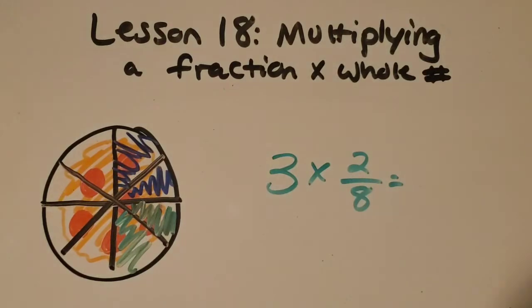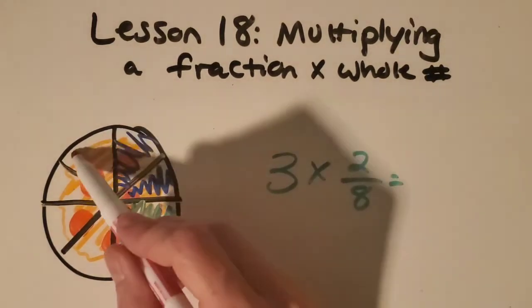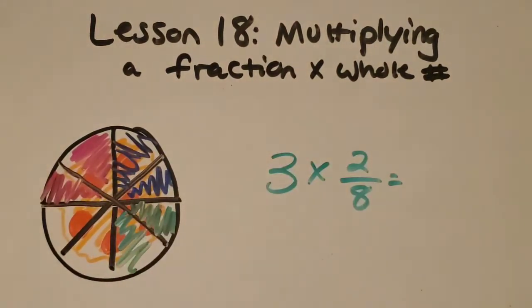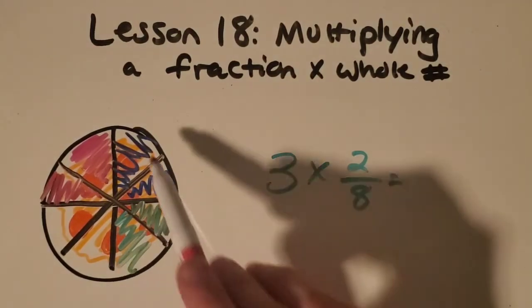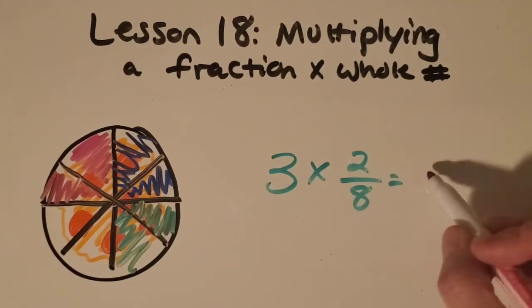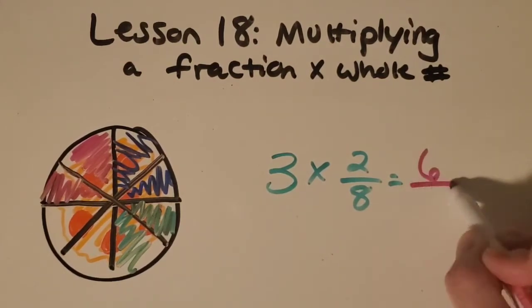Okay, so there's the second person. And then the third person had two-eighths as well. So we'll shade in there too. Okay, and then it's really super easy to find your answer. How much did I shade? Okay, great. I shaded in six-eighths.